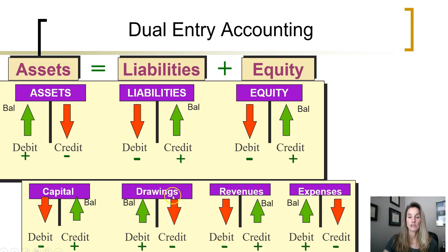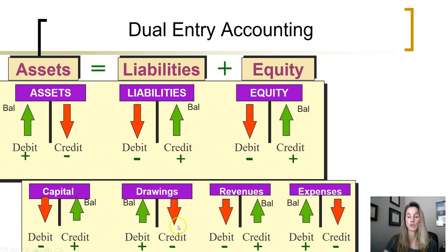Owner's drawings and expenses — as those increase, overall equity decreases. They will be offsetting the credit balance in equity. Expenses have a debit balance. Drawings have a debit balance. To increase them, we debit them. To decrease, we would credit. As those balances increase, they have an impact on equity of decreasing because they offset the credit balances of revenues and capital.